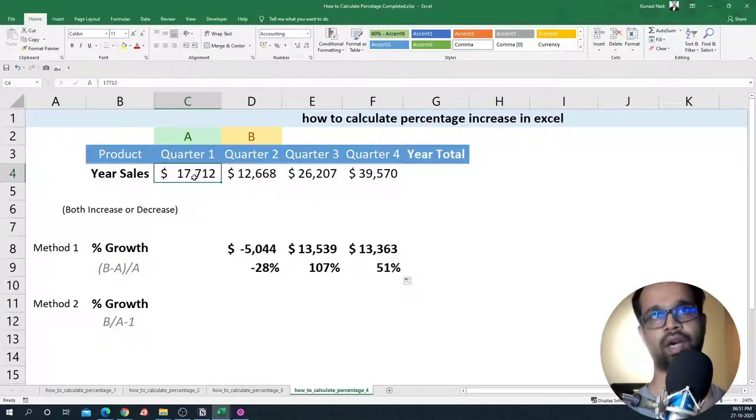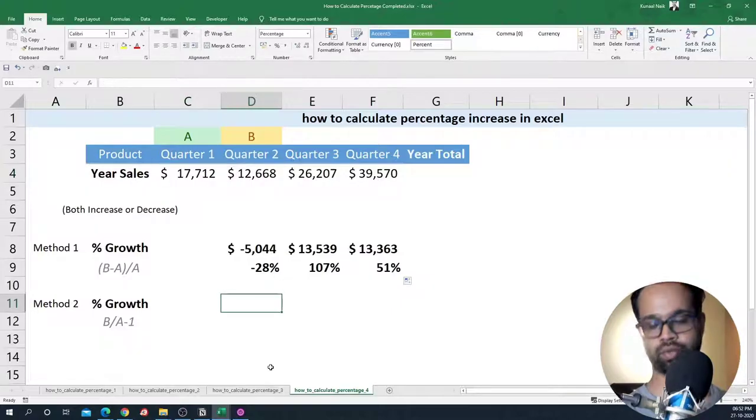That will give us a certain amount and obviously it will be a little more than the whole. That whole I will say is 100 percent. So what we do is we subtract one from it to get the right percentage growth.